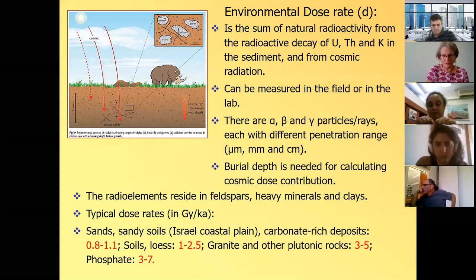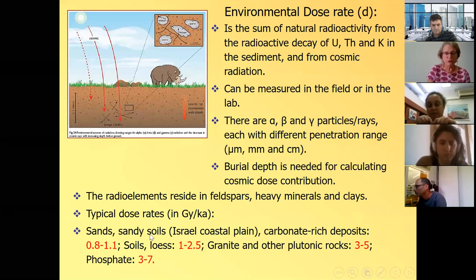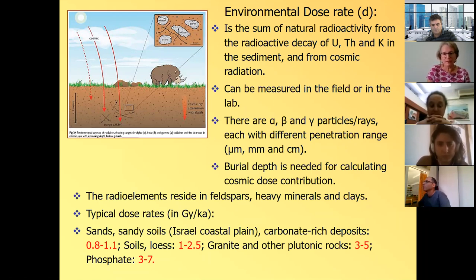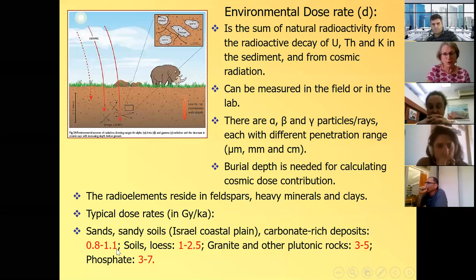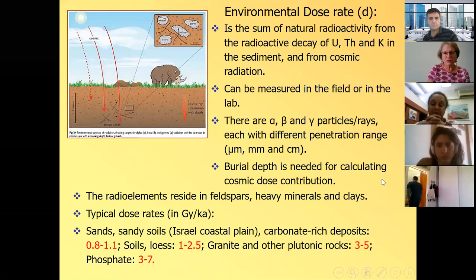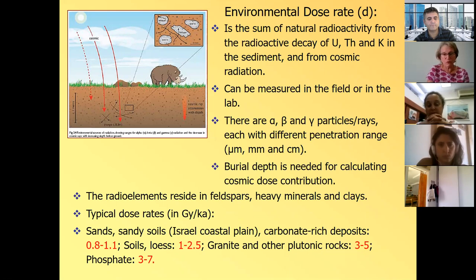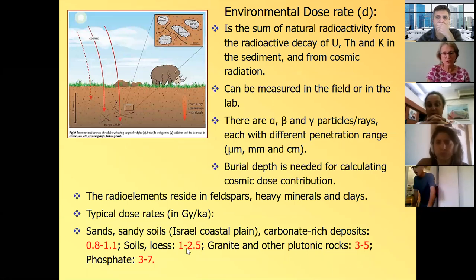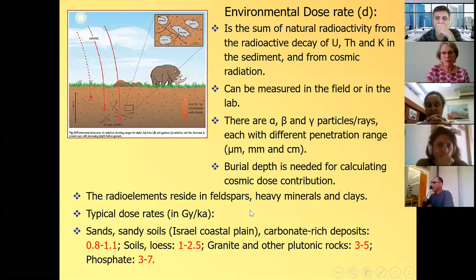So the more we have of these minerals, the higher is going to be the dose rate. So just so we understand what we're talking about, some typical dose rates for sediments in sandy sand, sandy soil, which are rich in quartz, like in the Israeli coastal plain or carbonate-rich deposits, highly cemented sands. The dose rate is low because there's very few of these feldspars or heavy minerals or clays. And it's between 0.8 and 1.1 gray per thousand years. It can be even lower. But this is kind of an average. When you go to soils and loess, they have more clays, they have more heavy minerals. It goes up from one gray to two and a half gray per thousand years. Granite is rich in heavy minerals, it's rich in feldspars, so it has a higher dose rate, other plutonic rocks, three to five gray. And in Israel, the rock with the highest dose rate is phosphate, just because it's rich in uranium. So it can be very high, three to seven gray per thousand years.